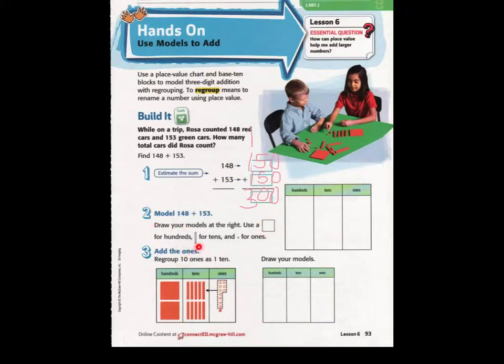We will use a long or a skinny to represent 10's, and we are just going to use this little dot right here for our 1's. So, I start out by making 148. I put 100, 10, 20, 30, 40, or 14.